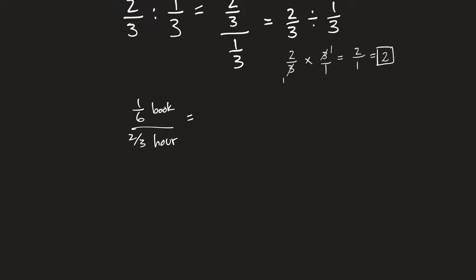Well, that's just one-sixth divided by two-thirds, and we have to invert and multiply. So the one-sixth stays the same. We multiply, and we invert the second fraction, which is three-halves.